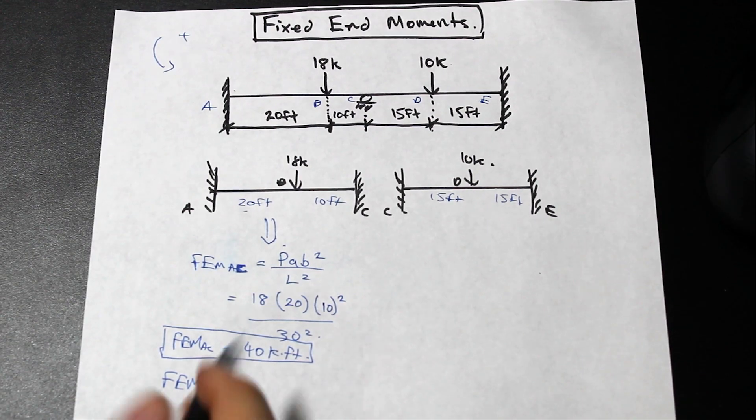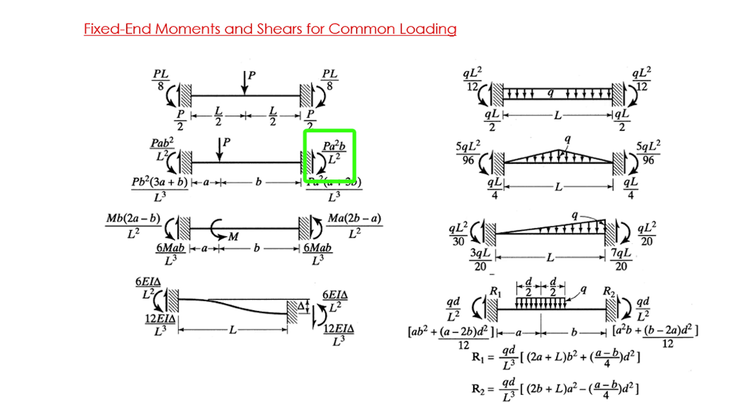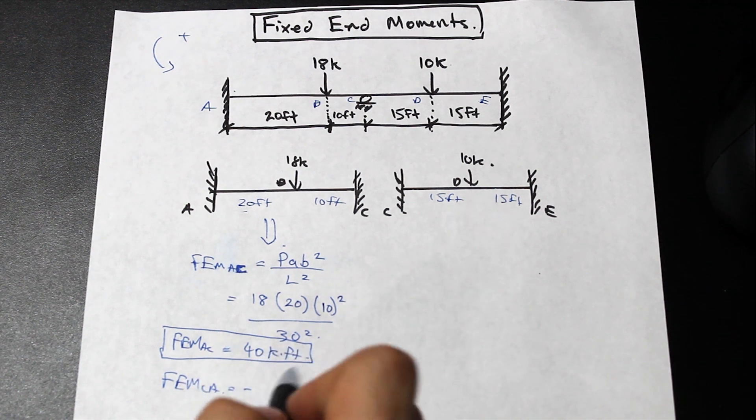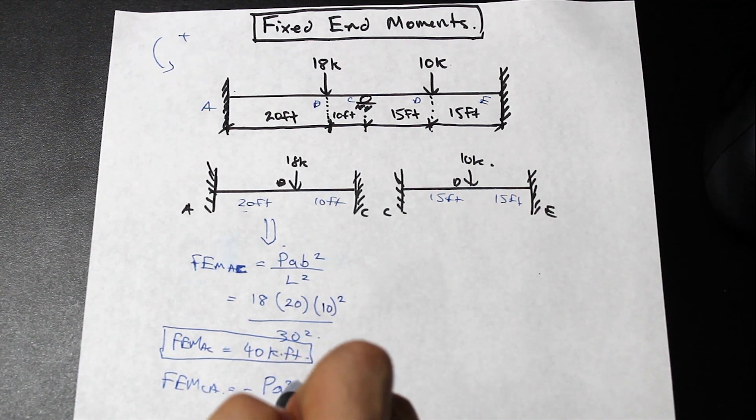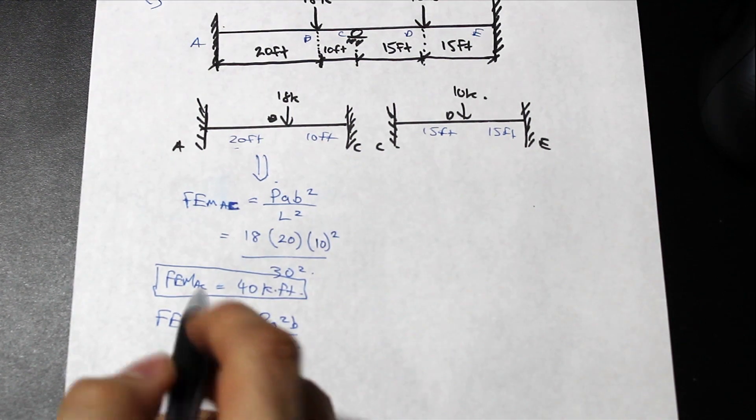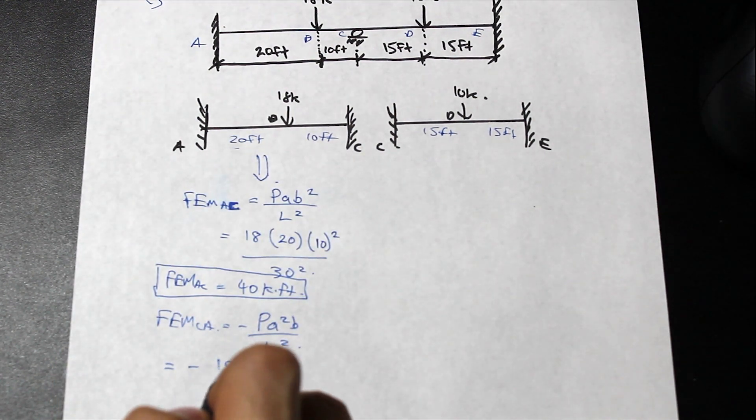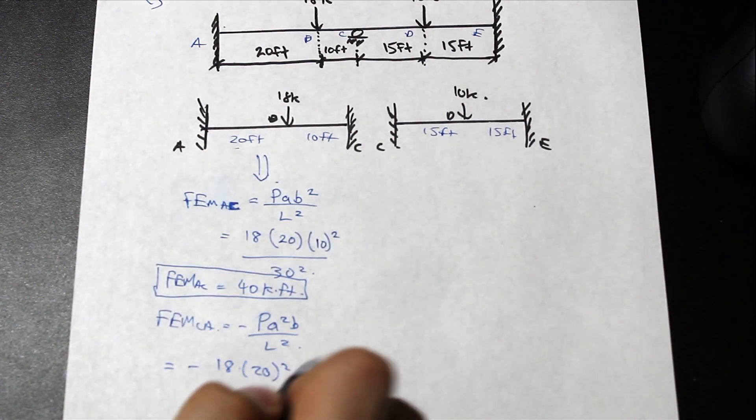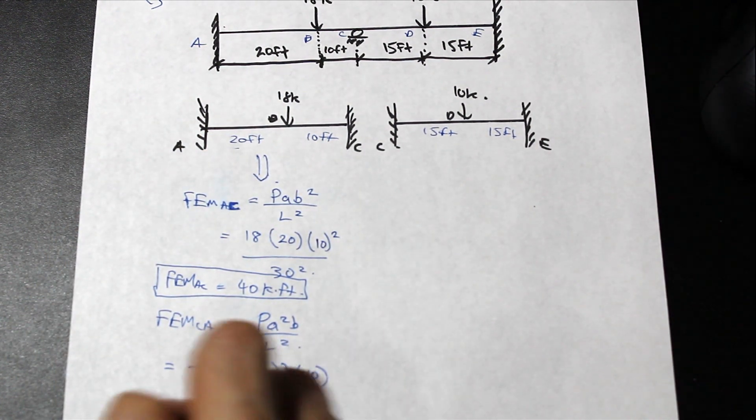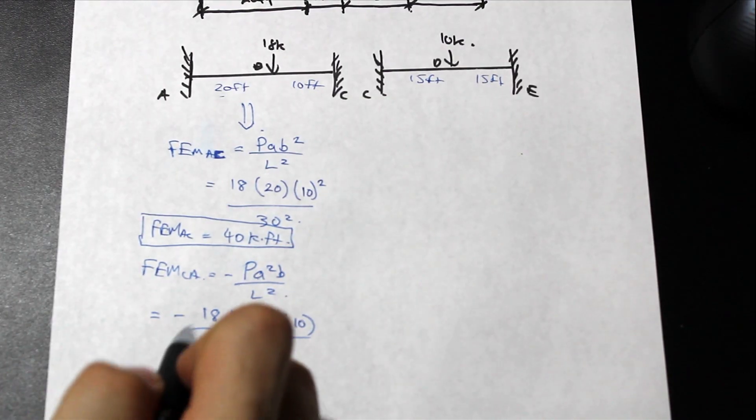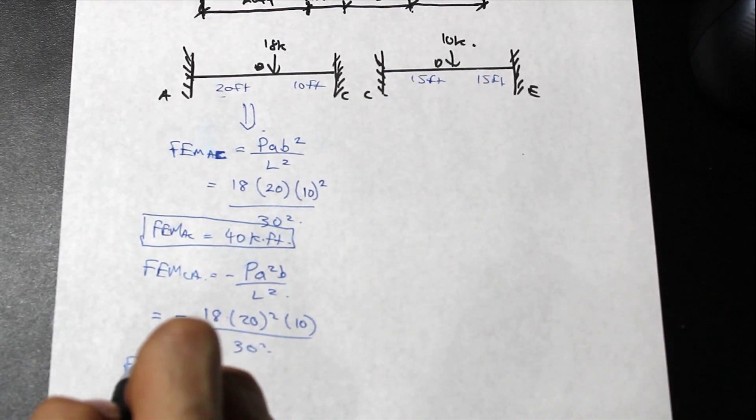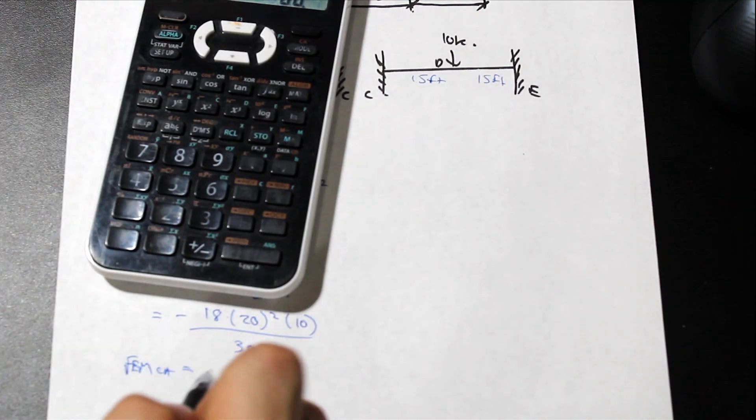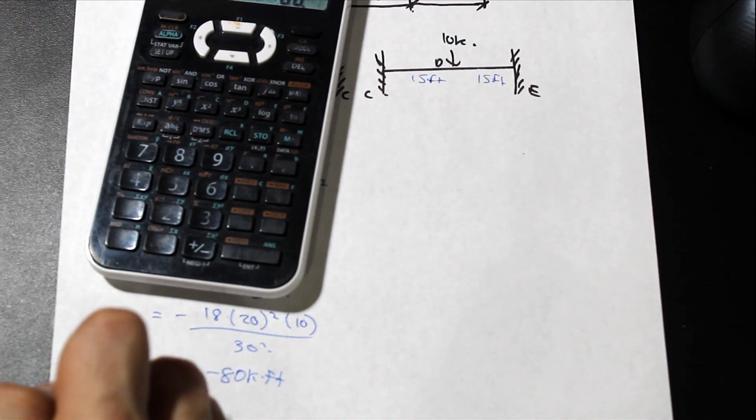Let's do the fixed end moment for CA. As you can see for CA, our formula changes a little bit. It's going to be negative because, look at our sign convention, it's opposite of our positive sign convention. We have P a squared B over L squared. So we go ahead and plug that in, we have negative P which is 18 still. We have our a squared, so a is the same but now a is squared, so we have 20 squared times 10 over the length which is the same, which is 30 squared. It's going to give us a value for the fixed end moment of CA of negative 80 kip feet.